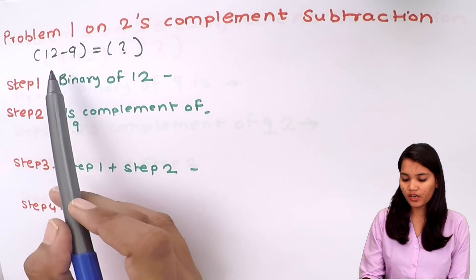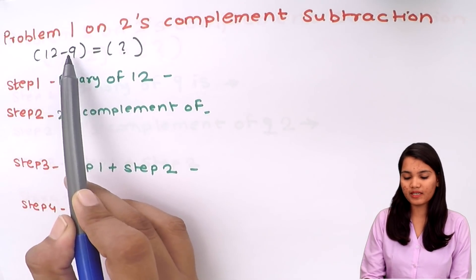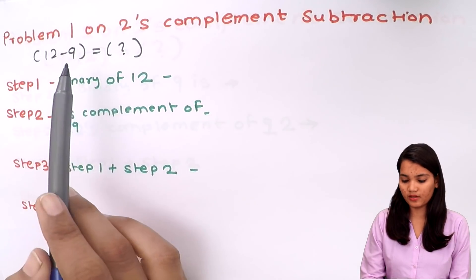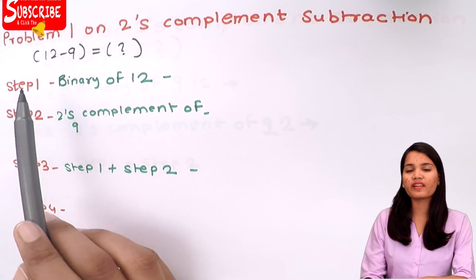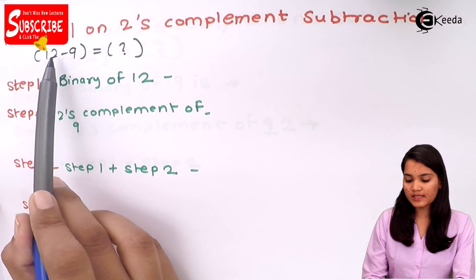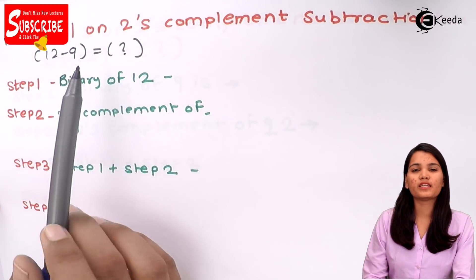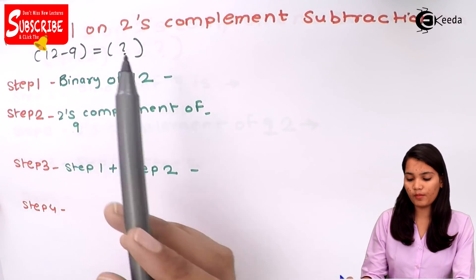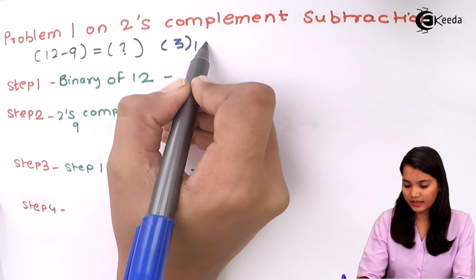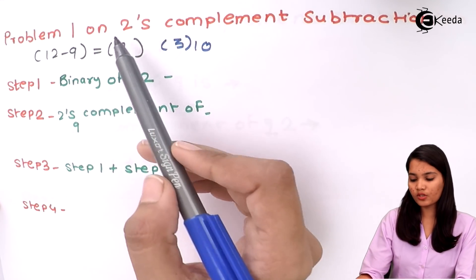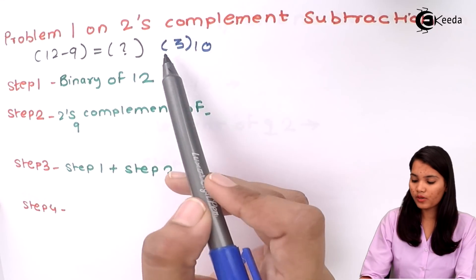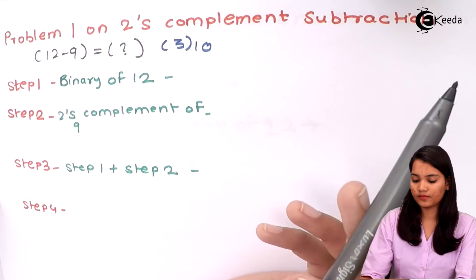Here we have to perform 12 minus 9 using the two's complement method. First, to verify the answer, let's perform this subtraction in normal decimal. So 12 minus 9 will give us 3 in decimal. Now let's perform the two's complement subtraction to get the correct answer as 3.